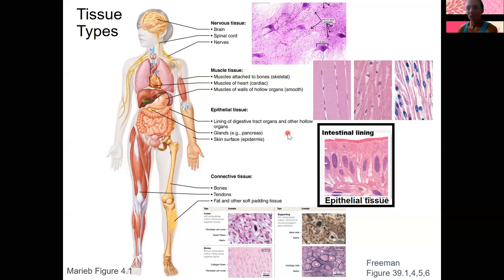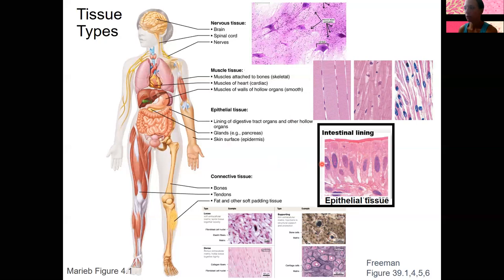Epithelial has a bit broader functions, which we'll get into more in a separate lecture. It is always on the outside of the body — outside can mean literally skin, but also internal outsides such as the digestive tract, trachea, and respiratory tract that have lumens. These hollow organs are considered outside of the body, and epithelium lines all of those. It also makes glands. Here's a picture of one example of epithelial tissue — this would be the intestinal lining with microvilli.